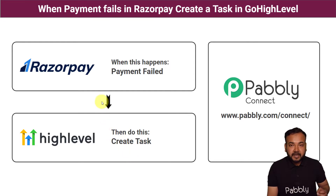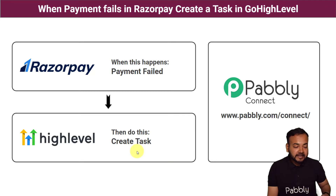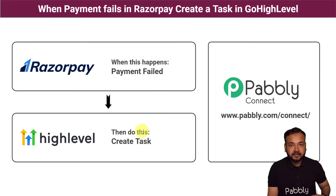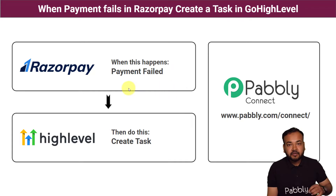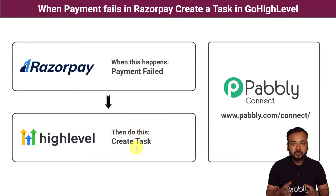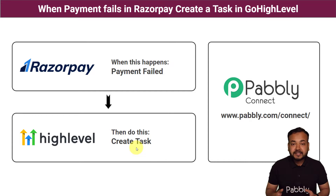Now if the payment of any customer fails in Razorpay while making a payment, a task will be automatically created in the GoHighLevel application to resolve this payment failure issue. This happens automatically as and when the payment fails — you don't need to manually check whose payment is failing and create a task manually. It's going to save a lot of crucial time and energy.